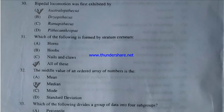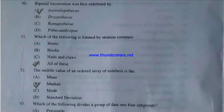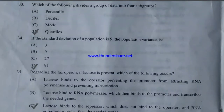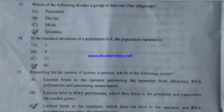Which of the following is formed by the stratum corneum layer — horns, hooves, nails, and claws, or all of these? The answer is all of these. The middle value of an ordered array of numbers is the mean, median, mode, or standard deviation? The answer is median. Which of the following divides a group of data into four subgroups — percentile, deciles, mode, or quartiles? The answer is D — quartiles.